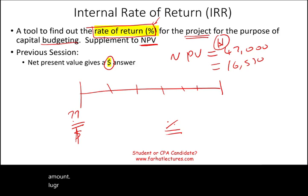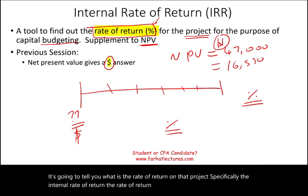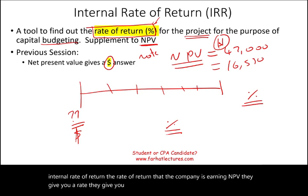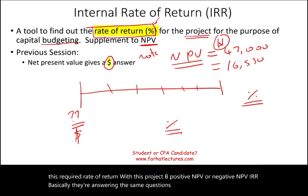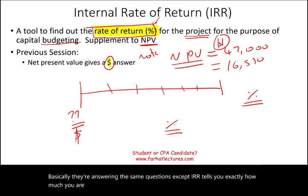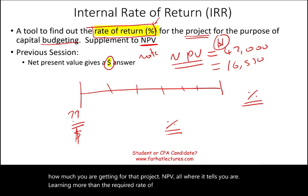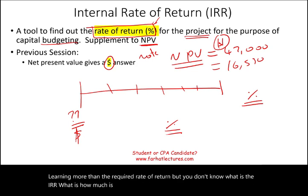IRR is going to tell you what is the rate of return on that project — specifically the internal rate of return, the rate of return that the company is earning. With NPV, they give you a required rate and want to find out whether the project would be positive or negative NPV. IRR answers the same question, except IRR tells you exactly how much you are getting for that project. With NPV, all you know is you are earning more than the required rate of return, but you don't know exactly what the project is earning.